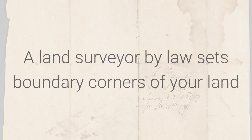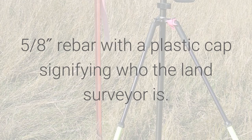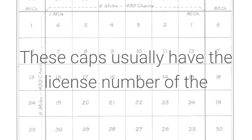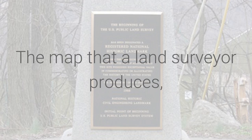A land surveyor, by law, sets boundary corners of your lands and marks them with usually an 18-inch, 5/8 rebar with a plastic cap signifying who the land surveyor is. These caps usually have the license number of the individual who is registered with your particular state.